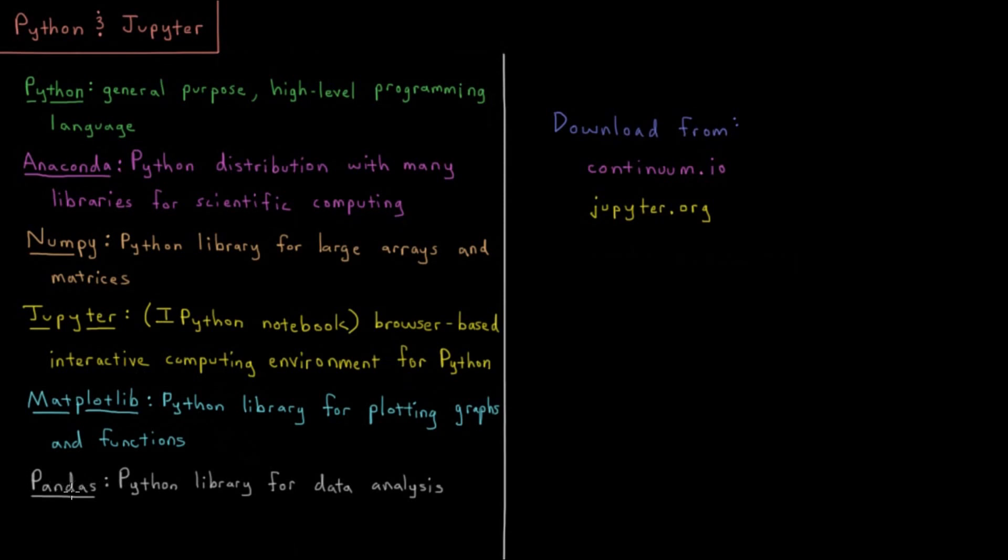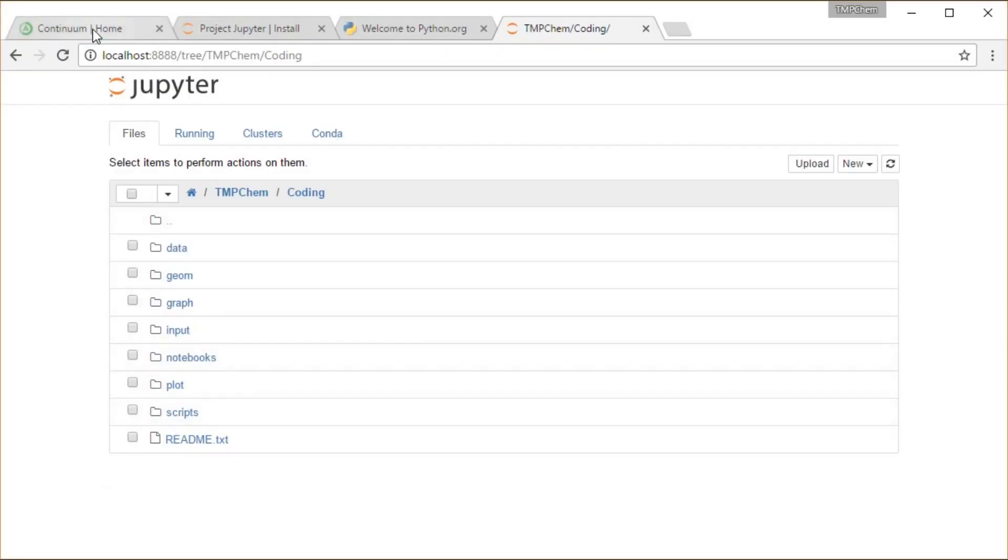And then lastly, there's a library called Pandas, which is very useful for all the data analysis type tools that we need to use a lot in these situations. So that's a very abstract, boring kind of overview of those things. The main important things here are to download these things. We download Anaconda from Continuum.io and the notes for Jupyter from jupyter.org. So let's take a look here.